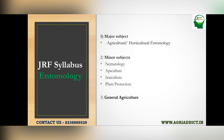First of all, we have to discuss the entire syllabus of JRF Entomology — what we have to read and learn throughout our preparation. The syllabus is mainly divided into three parts: major subject, minor subject, and general agriculture. The major subject consists of agricultural or horticultural entomology, and the minor subjects consist of nematology, apiculture, sericulture, plant protection, and finally general agriculture.